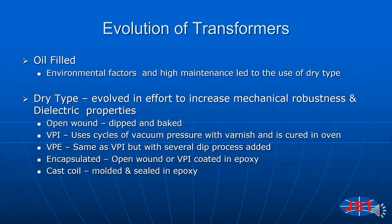Cast coil transformers have the transformer windings solidly cast in epoxy resin. This is accomplished by placing the transformer windings in a mold and molding the windings in epoxy while placed in a vacuum casting chamber.